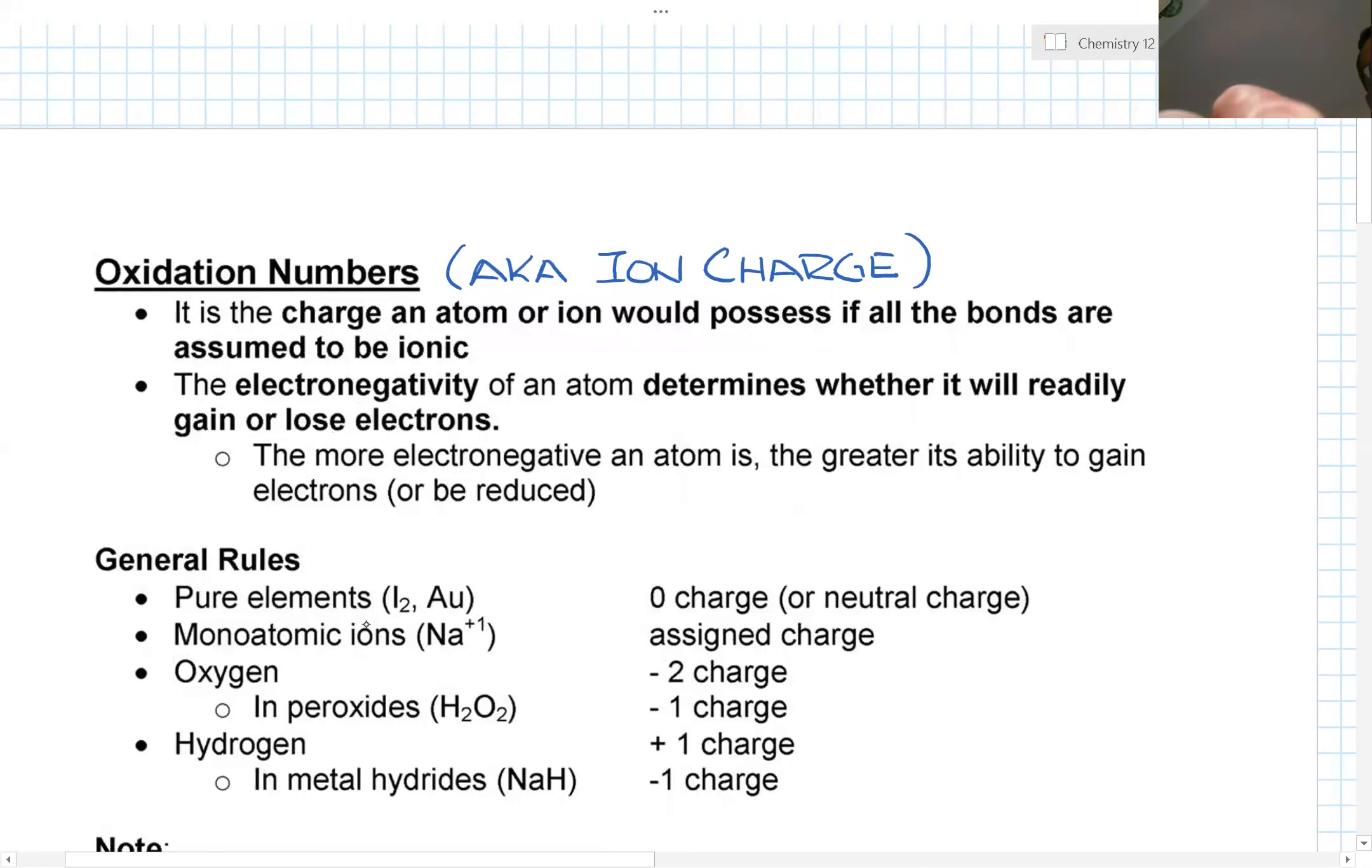So it is the charge an atom or ion would possess if all the bonds are assumed to be ionic. Now this is one thing about oxidation reduction—there is no such thing as covalent bonds anymore. Because it's a transfer of electrons, what we're assuming is that everything will be ionic. So there's going to be a transfer of electrons, there's no more sharing.